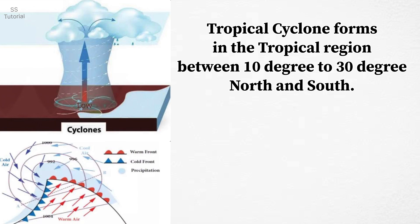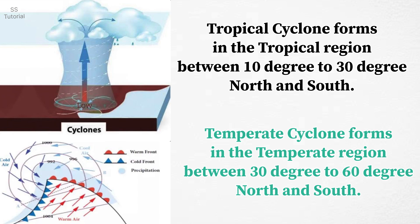The cyclones that are formed in the tropical region between 10 degree to 30 degree north and south are called tropical cyclones. And the cyclones that are formed in the temperate region between 30 degree to 60 degree north and south are called temperate cyclones.